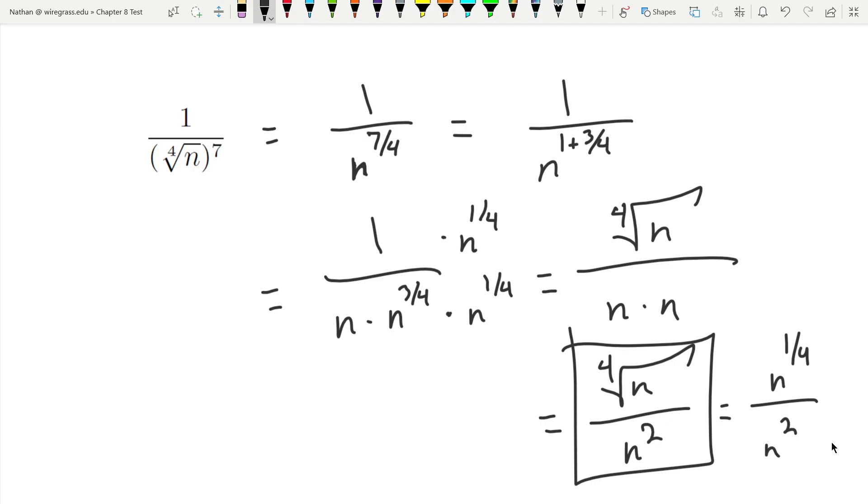Whenever you divide like bases, you subtract the exponents, so n to the 1 fourth minus 2. But 2 is the same thing as 8 fourths, and that gives us n to the negative 7 fourths. And that is exactly what we had started with. So I know I've done this correctly. I haven't changed the problem around at all.